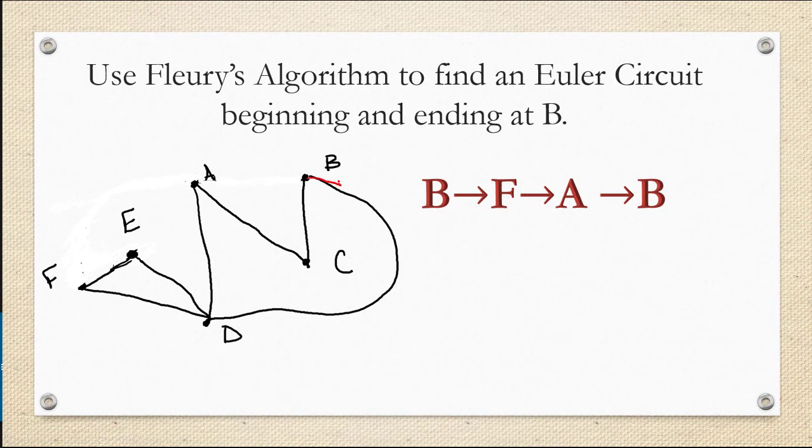Now that I'm at B, I can either go from B to D or from B to C. Those are my only two options. Doesn't look like either of these will cause a disconnection. Neither of them are cut edges. So I decided that I would just go B to D.